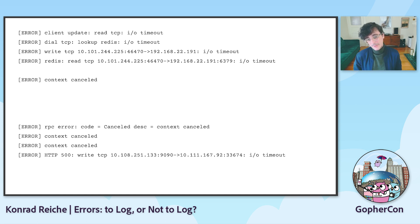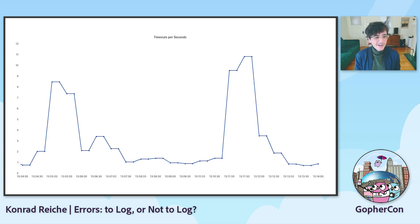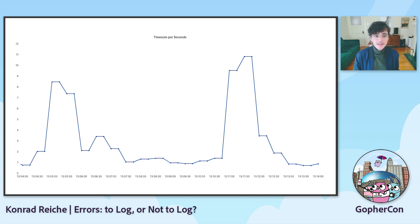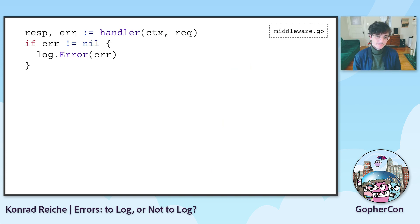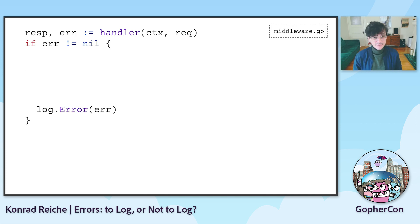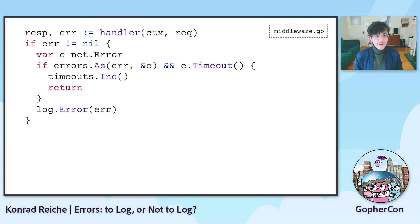There is a much better observability tool for this: metrics. We can use a counter to simply observe timeouts and plot them as a graph. Not only does it make it easier to quantify them, now we can also create alerts based on them. So you use errors.As to check if the error matches a specific target — in this case, a network error. And if it is in fact a timeout, we increment the counter and don't log it anymore.